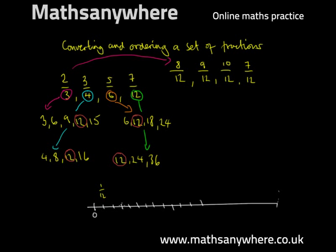So we've got 1-twelfth, 2-twelfths, 3-twelfths, 4-twelfths, 5-twelfths, and we've got 6-twelfths, 7-twelfths, 8-twelfths, 9-twelfths, 10-twelfths, and by that point we've ordered our fractions.